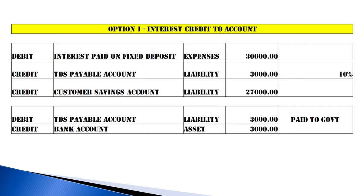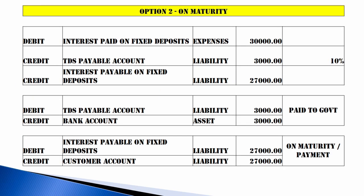For this month, whatever TDS I have deducted, I will remit the entire amount from the TDS payable account to the bank account before the 7th or 8th of next month, because it goes to the government. So here there is no provisioning — this month I am collecting, next month I am paying. But Option 2 is different.